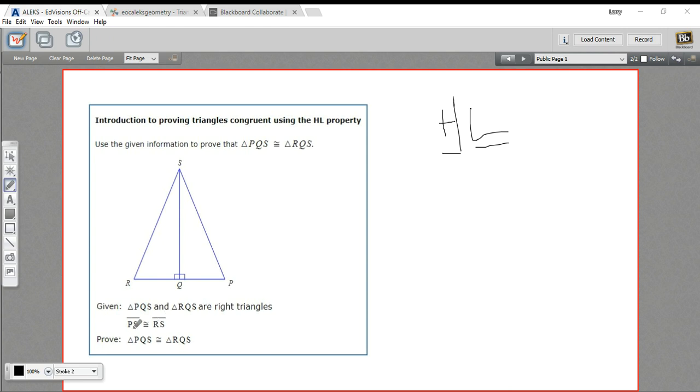And then it says PS is congruent to RS. So PS is here. RS is here. So the hypotenuses are congruent. So that's good. We've got the hypotenuse part.